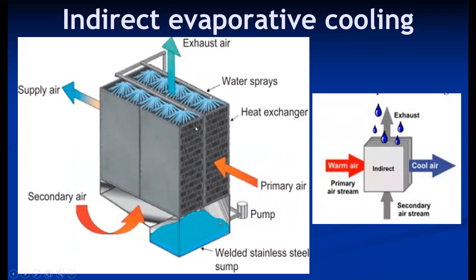In indirect evaporative cooling, since there is no direct contact between primary air and water, no absolute moisture is added to the air — only sensible cooling occurs. If the sprayed water temperature is below the dew point temperature of entering air, dehumidification is also possible, but in most cases only sensible cooling happens. This system is used where only cooling is required. Two fluid streams are used: a secondary airstream and a primary airstream.